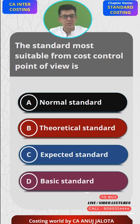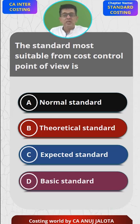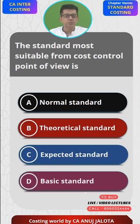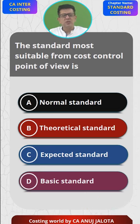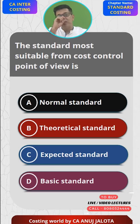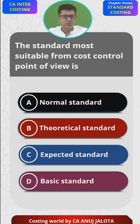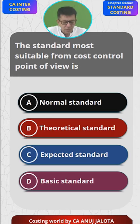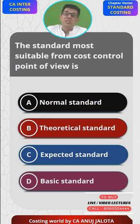Lastly, D is basic standard. Basic standard is applicable where things do not change much. For example, the base price of raw material two years ago was ₹5 per kg, and since this material does not change much, we let it remain as the standard. These standards are mainly useful from a long-term perspective.